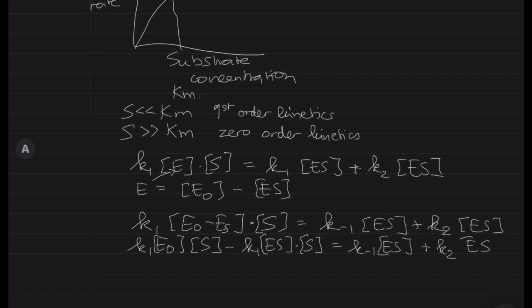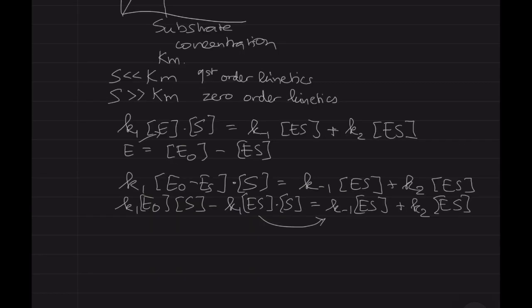So I'm bringing this between brackets, so you get something like K1 E0 times the substrate minus K1 ES times S, and what's on the other side remains the same. And then I'll have a look at, as you can see, ES is mentioned in three of the sums here, so I'll bring the bit where you have minus K1 times ES times S to the other side. So you will see everything on the right hand side will depend on ES one way or the other.